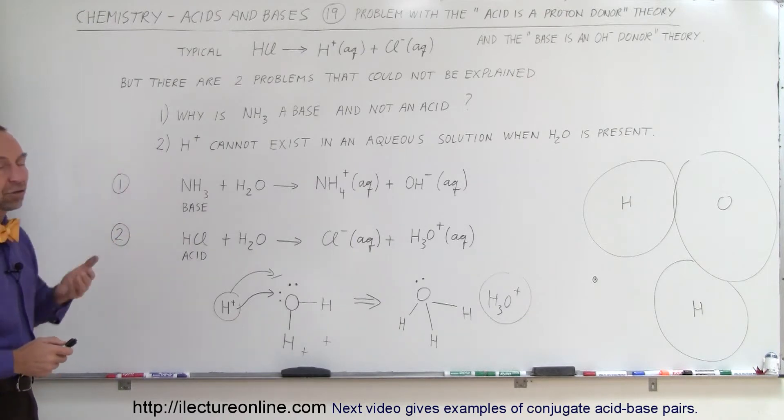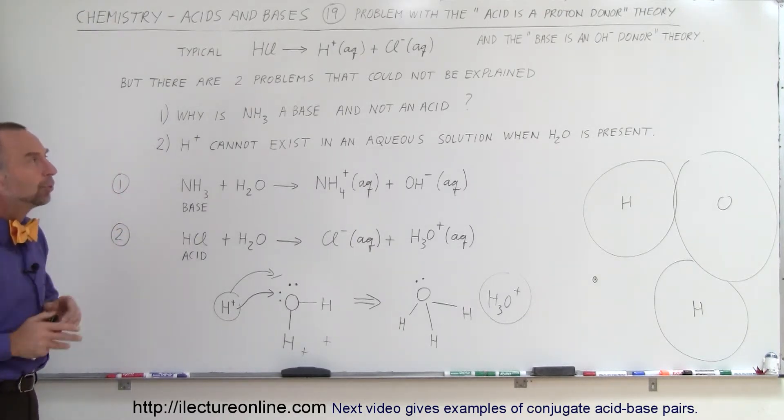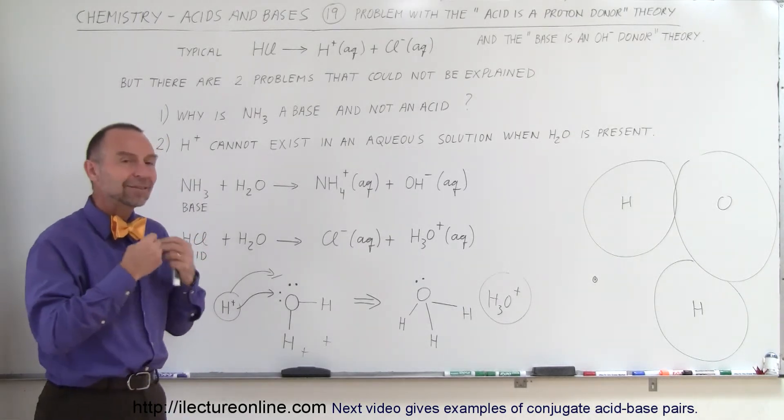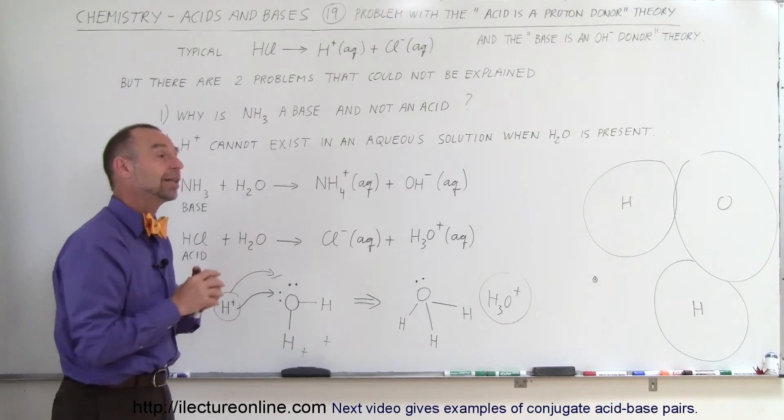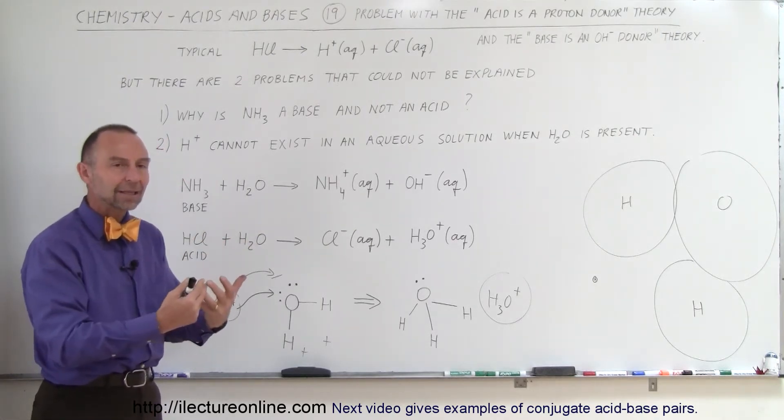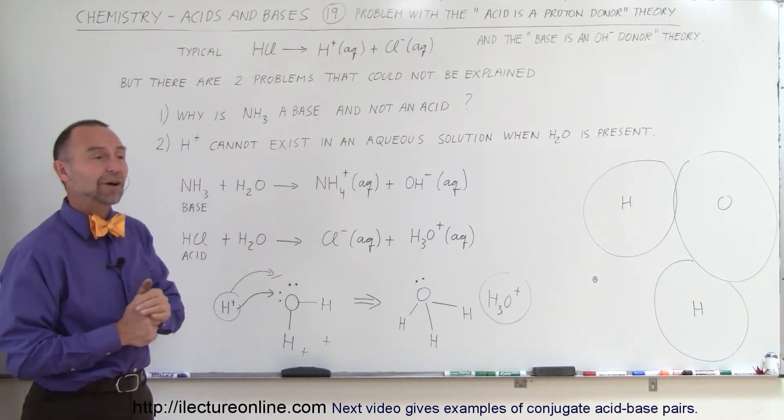So here are some examples where that initial theory doesn't work. Does that mean we should throw that theory away and not use it? No, not at all. We can still use it in many cases. Just keep in mind that it's not the hydrogen ion that floats around freely in the aqueous solution; that actually turns into a hydronium ion. But for practicality, there are plenty of equations we can write like that and work with, and they'll be just perfectly fine.